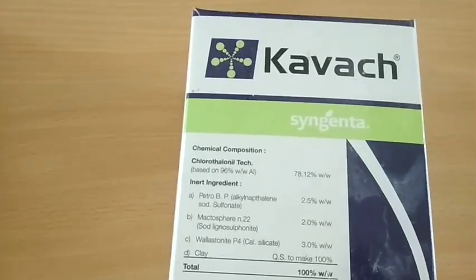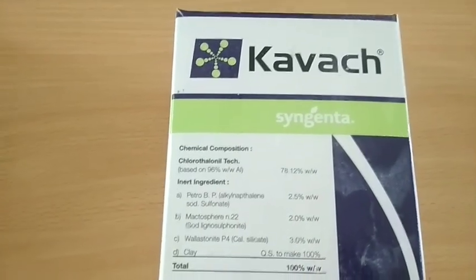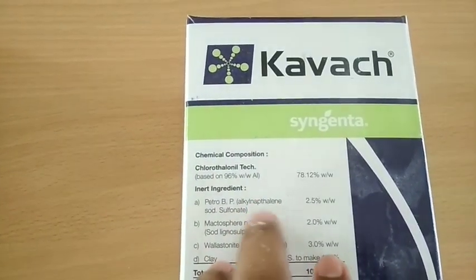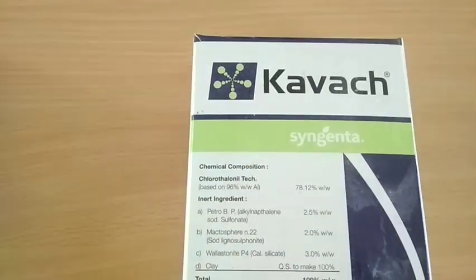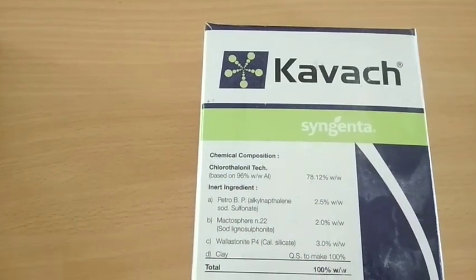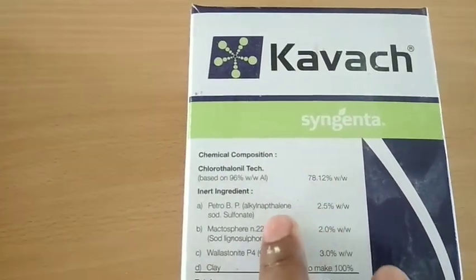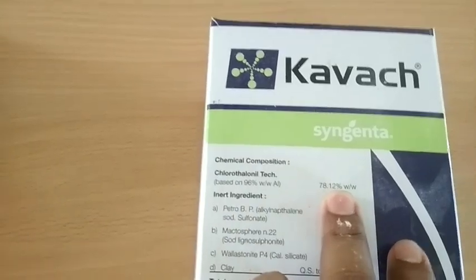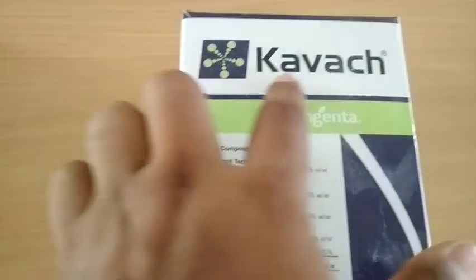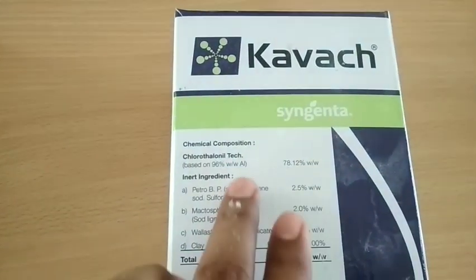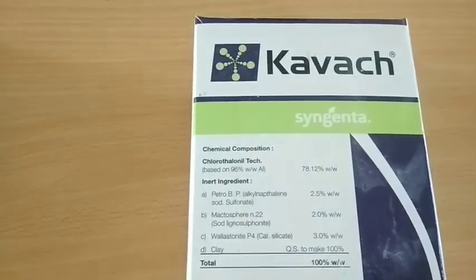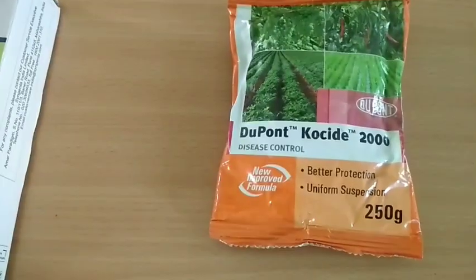Next is Kawach, which is one of the broad spectrum fungicides. It is a contact fungicide with an active ingredient of 78.12%. Kawach is nothing but chlorothalanil, which is a broad spectrum contact fungicide.